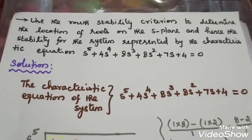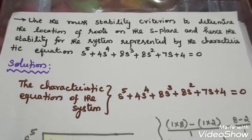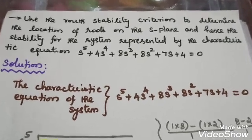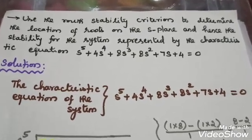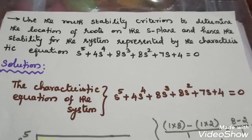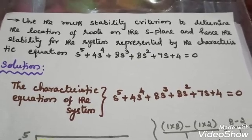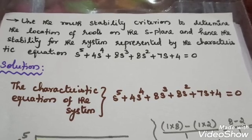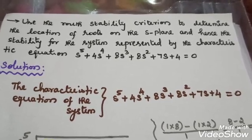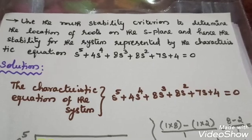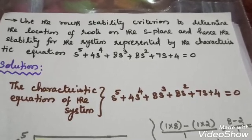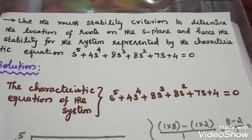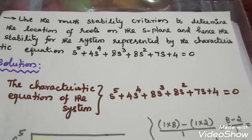Hi students, I am going to talk about the problem in this video. The problem is S² + 7S + 4 is equal to 0. So this is the problem in this video.